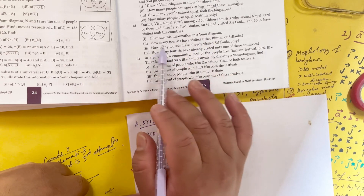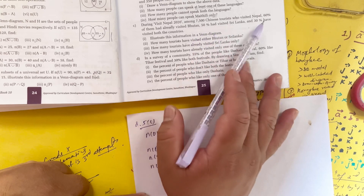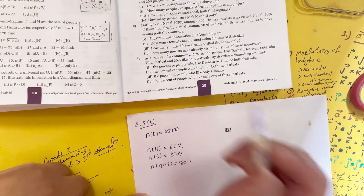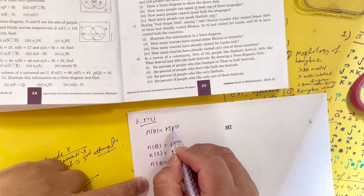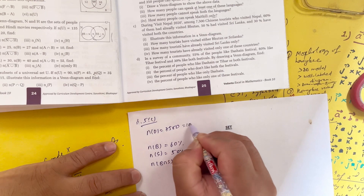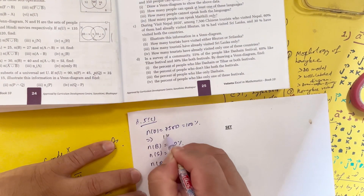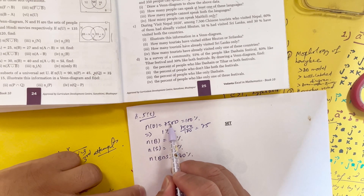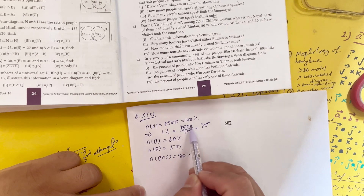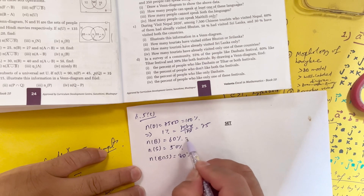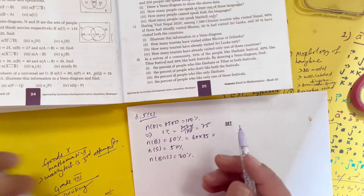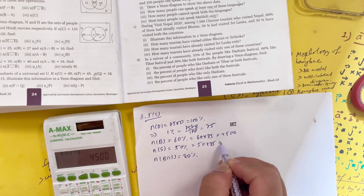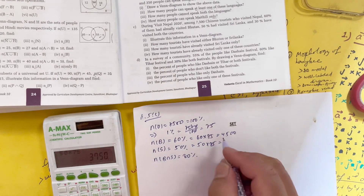Illustrate this information in a Venn diagram. How many tourists have visited either Bhutan or Sri Lanka? The universal set NU is the total — 100% means 1% equals 75,000 divided by 100, which is 75. So 50% equals 50 into 75, which is 3,750.